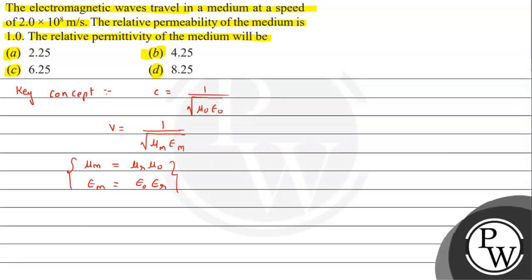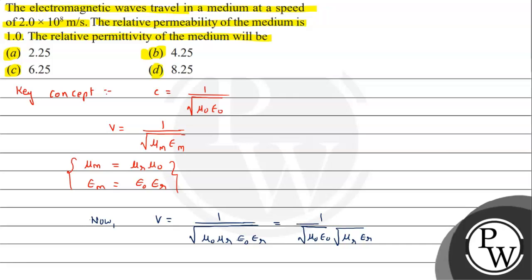We can say the expression we use: V equals 1 upon under root of μ_M, which can be written as μ₀ε₀. Simplifying a bit, this becomes C upon under root of μ_R into ε_R.